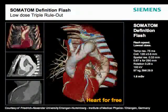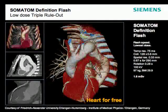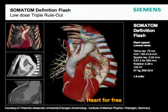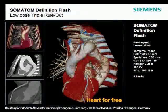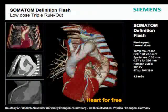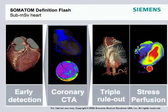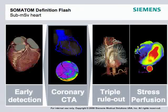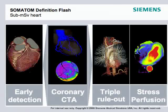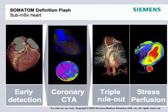A triple rule-out exam example demonstrates visibility of four proximal stents, pulmonary embolus structures, and the heart — all in one exam — at a BMI of 29.9 and only 1.6 millisieverts. With all these technologies combined in the Definition Flash, early detection coronary CTA, triple rule-out, and stress perfusion are now a reality. Sub-millisievert scans routinely provide morphologic and functional assessment in one exam, and the entire chest can be scanned in 0.6 seconds.